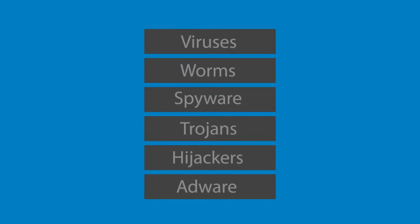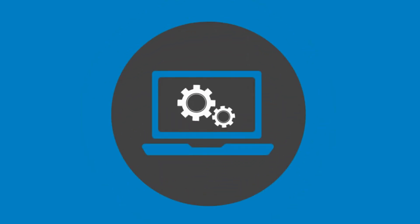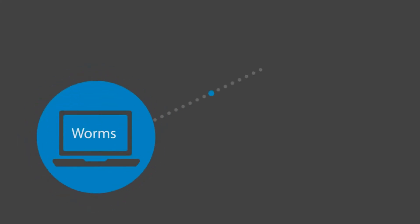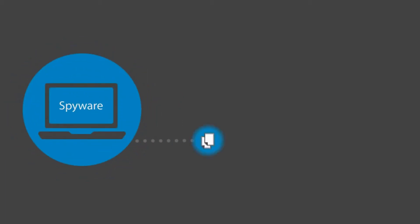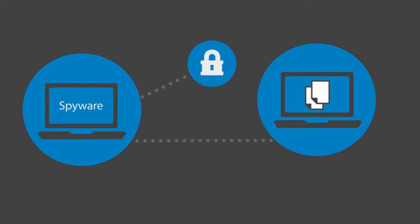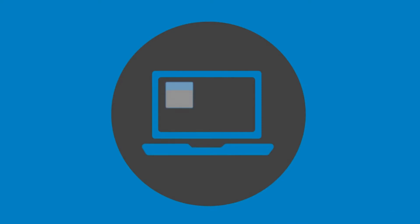Now you can see some examples. A virus is software created to damage a system. Worms infect the Mac computer via a network and make the computer very slow. Spyware are programs that collect information from your computer without your knowledge. Adware is software that creates pop-up ads on your screen without your permission.